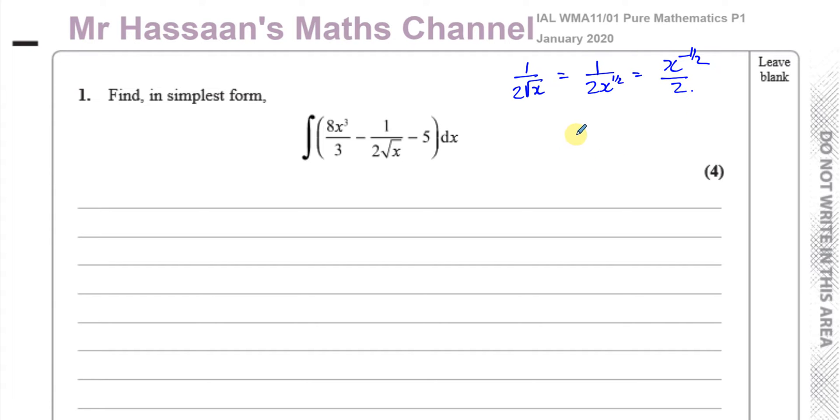What's very common for people to make a mistake here is to write this as 2x to the power of negative a half, bringing the 2 up with the x, which is not correct, because it's only the x which is to the power of a half, not the 2. If we were to bring the 2 up, we would have to write it differently, and then that makes things complicated anyway. So it's better to write this as x to the power of negative a half over 2.